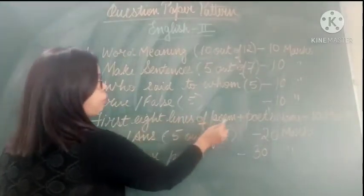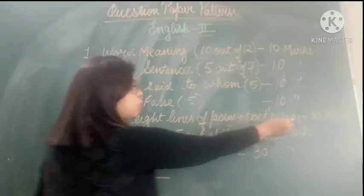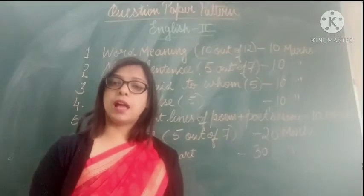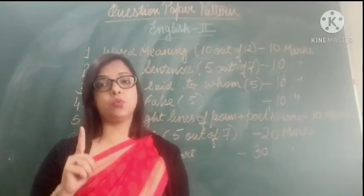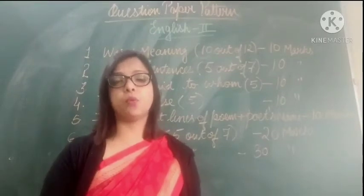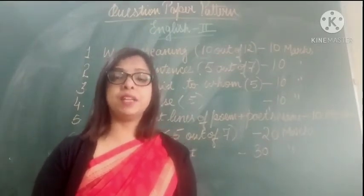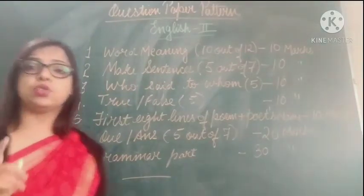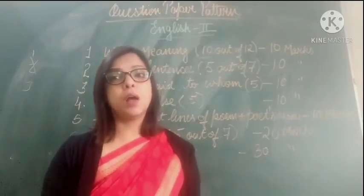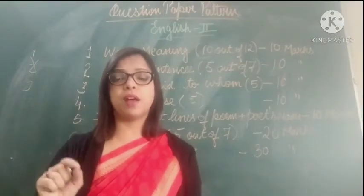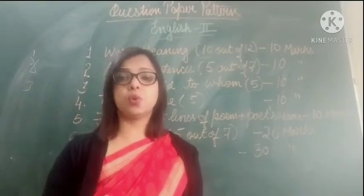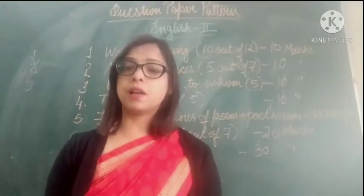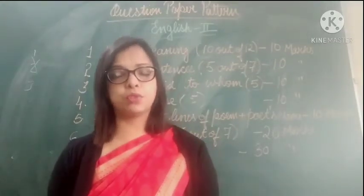The first 8 lines of a poem plus the poem's name — that is of 10 marks. You have got 3 poems, any 2 will come, and out of those 2 you have to attempt any 1 poem. Write the first 8 lines of the poem as given in the book. Please don't number the lines 1, 2, 3 — I will cut marks and you will get 0. See all the punctuation marks given in the poem — where it is a full stop, where it is a comma.